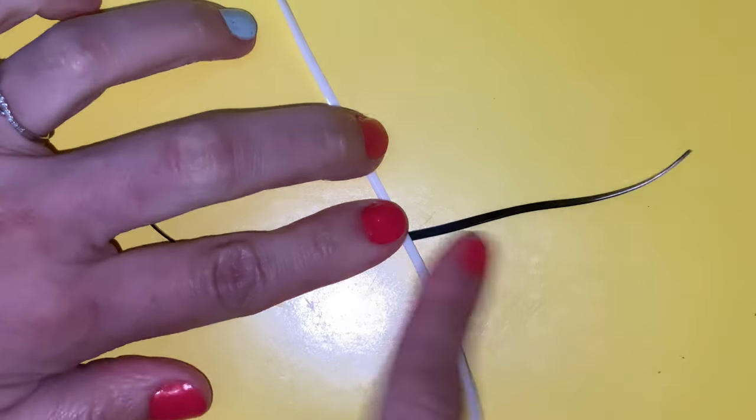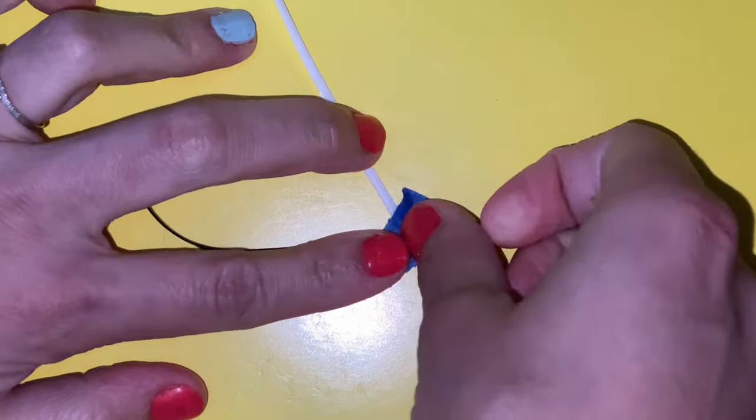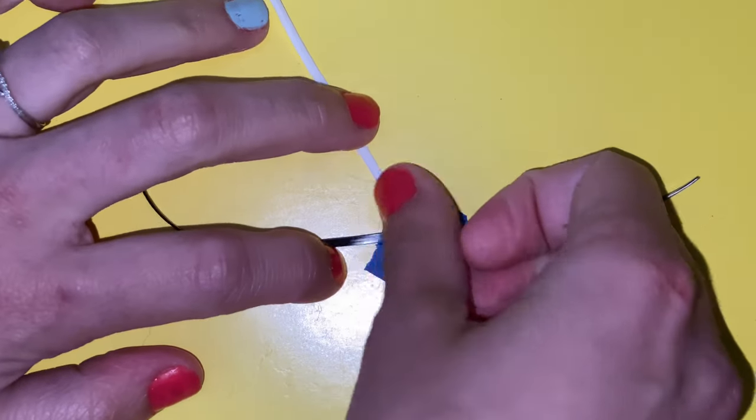Then you're going to lay that X down, hold it there, and this is where the tape comes in. I have a piece of tape here and I'm laying that down on top of my X to hold it down.